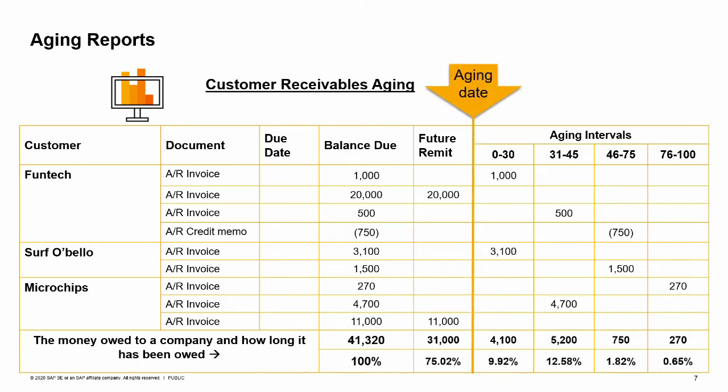You can specify an aging date after which the due dates are to be calculated. You can also specify intervals in days, months, or periods for grouping receivables by how old they are. As you can see in the graphic, this report gives you a quick look at how overdue your invoices are, and at the bottom you can see the percentages of overdue invoices in each aging interval.